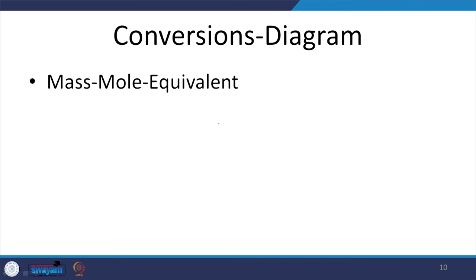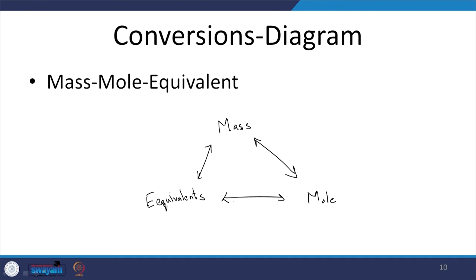For unit conversions between mass, moles, and equivalents: to go from mass to moles, divide or multiply by the molar mass; to go from mass to equivalents, use the equivalent weight or equivalent mass; and to go between moles and equivalents, use equivalents per mole. In that way you can convert from one unit to the other.